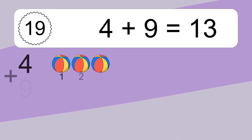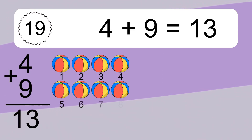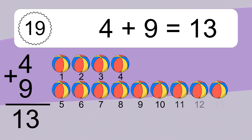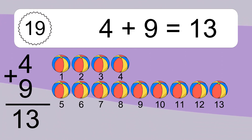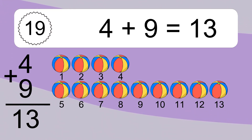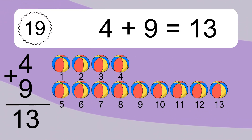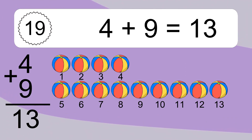4 plus 9 equals 13. Let's count it. 1, 2, 3, 4, 5, 6, 7, 8, 9, 10, 11, 12, 13.